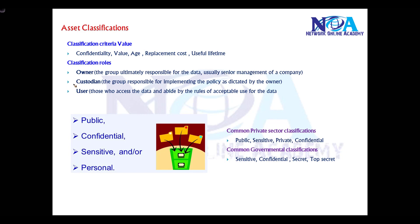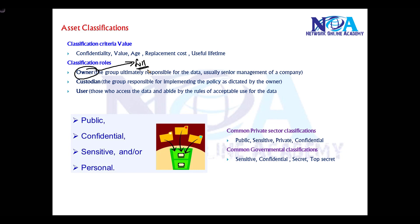The next thing is roles. Roles represent how these assets are managed. Generally there are three different types of roles. Owners have administrative control over the asset, meaning they have full permissions and complete control. They are the senior most officers in the company — senior management responsible for managing and keeping track of those assets, like a CEO or MD of the company.